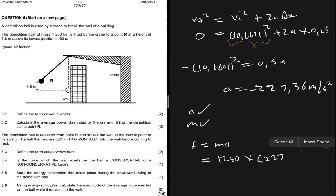And then if I put that in the calculator I get, let me see, 1250 multiplied by 227.36, I get minus 284,200 newtons.